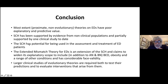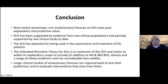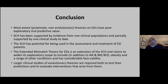The sexual competition hypothesis has the potential for being used in the assessment and treatment of eating disorder patients. The extended mismatch theories are an extension of the sexual competition hypothesis and claim to widen its explanatory scope to include, in addition to anorexia and bulimia, binge eating disorder, obesity, and a range of other conditions. These have considerable face validity, and I would suggest that larger clinical studies of evolutionary theories on eating disorders are required both to test their predictions and to evaluate interventions that arise from them.